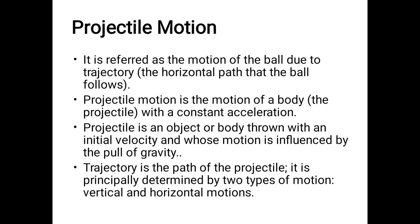We also have projectile motion. Projectile is the motion of a ball due to trajectory, or the movement of an object along a horizontal path—a direct path. Projectile motion is the motion of a body with constant acceleration that remains the same. The initial velocity plus the effect of gravity is the same. When we say trajectory, this is the path of the projectile. For example, when you fire a gun, the path of that bullet is called the trajectory.